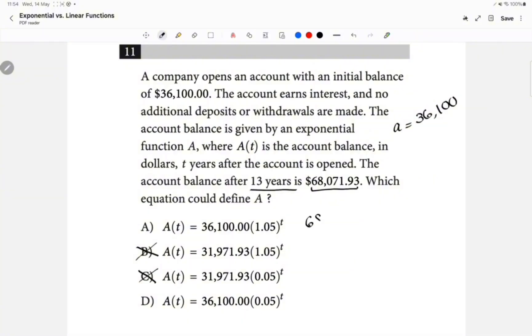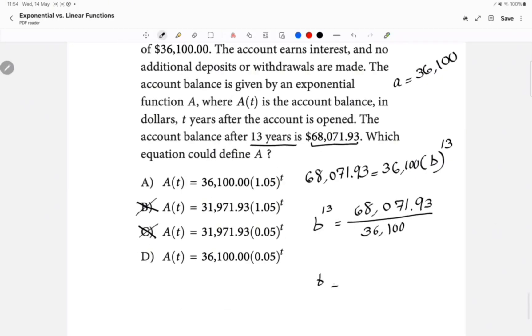And so what do we do? We say that the current account is equal to the initial account times B, which we don't know what that is, to the power of 13, which is the time. And so B to the power of 13 is equal to 68,071.93 over 36,100. And so B is equal to, you take that whole thing and you raise it to the 13th root, essentially.